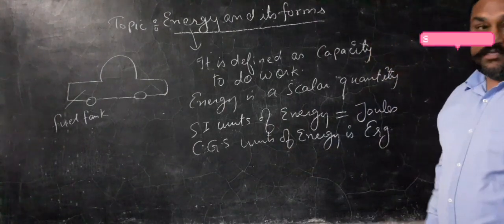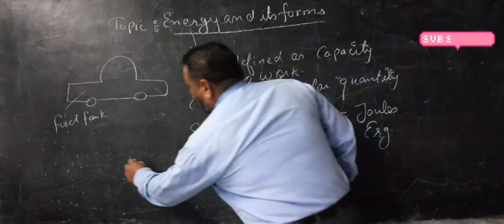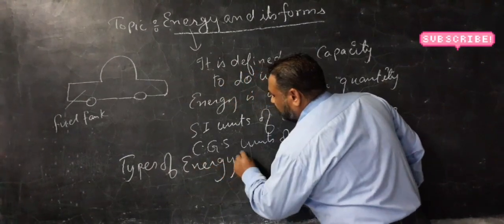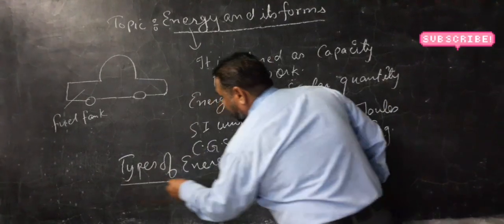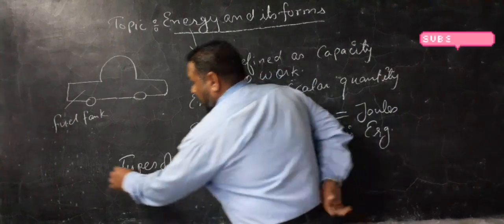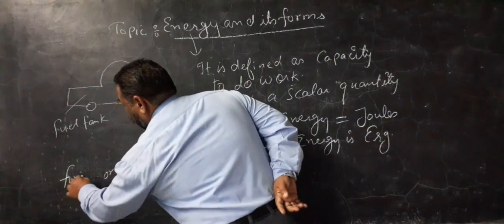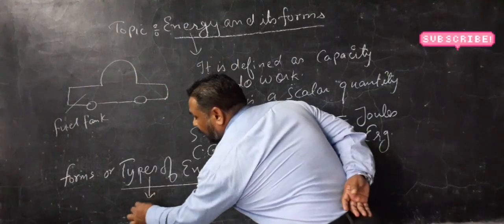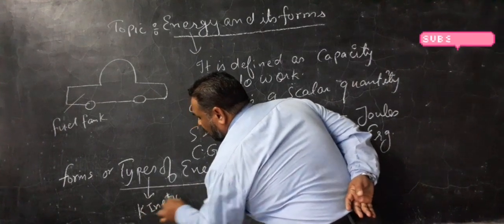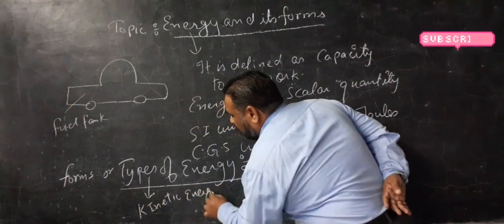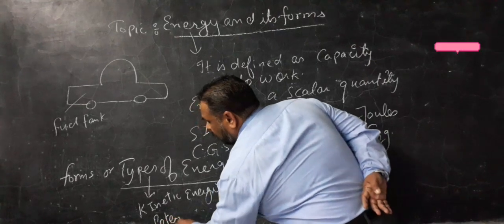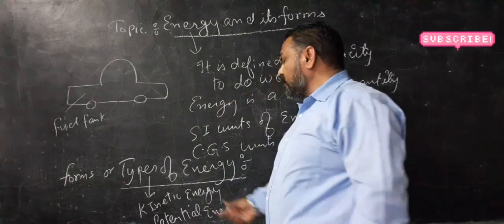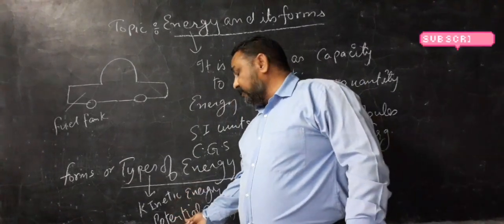So now, SI unit of energy is joules and CGS unit of energy is erg. Now, types of energy, or you can say forms of energy. There are two kinds of energy mainly: that is kinetic energy and potential energy.